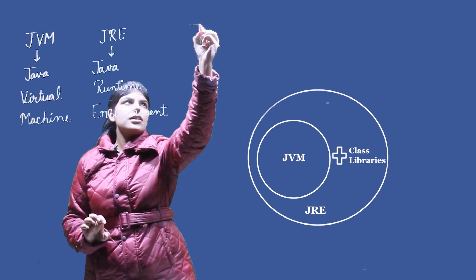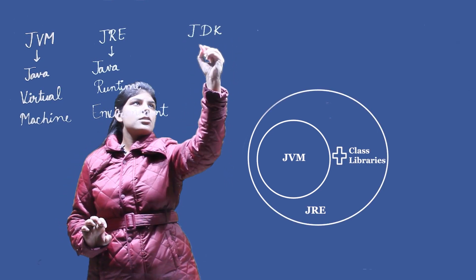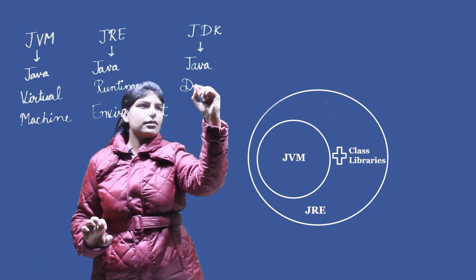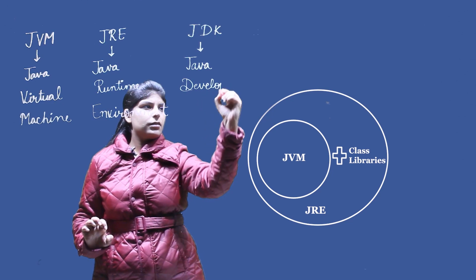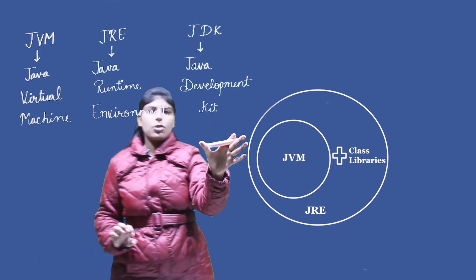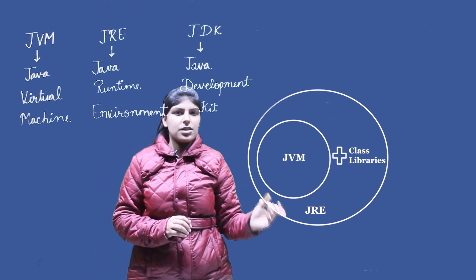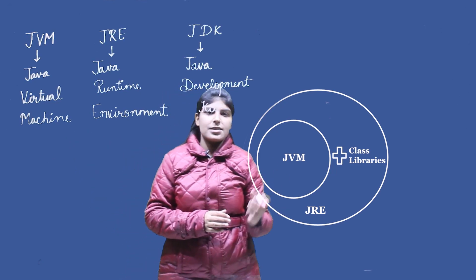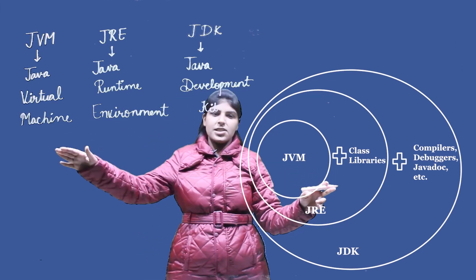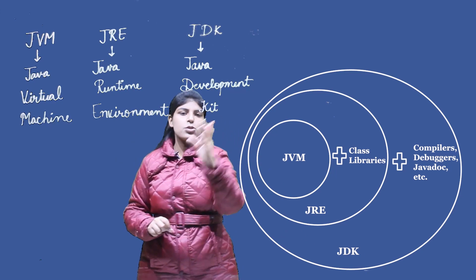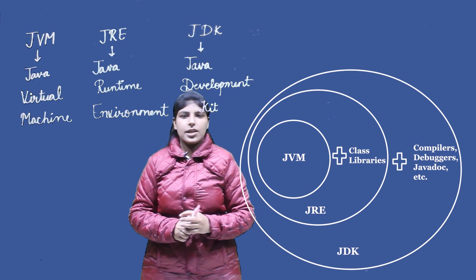Next is JDK — Java Development Kit — which is a complete kit used for running Java code. It contains JRE as well as other development tools like compilers and debuggers. JRE is a superset of JVM, and JDK is a superset of JRE.